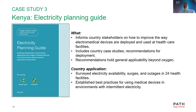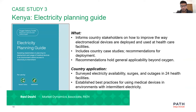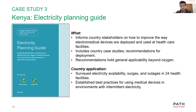Now I'd like to give the floor to Ravi Idoshi, Market Dynamics Associate, who is going to talk about Kenya as an example, focusing on the challenges of distribution, system procurement, management, and tracking resources. My name is Ravi Idoshi, I'm an associate with the Market Dynamics team at PATH, based in Washington, D.C.